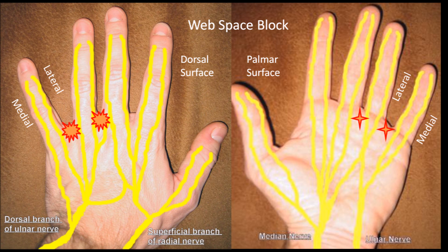The web space block is potentially the most patient-friendly block, as only 2 injections are required. In this block you aim to anaesthetize the dorsal and the palmar digital nerves by injecting into the web space. You inject from the dorsal aspect down into the palmar aspect and cover both nerves at the same time.